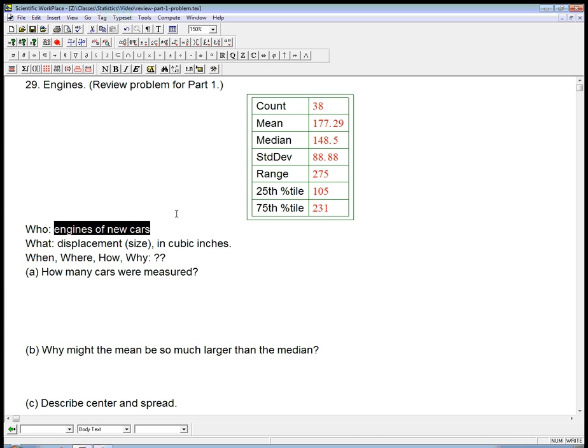We're going to go through some problems to make sure we understand what these summary stats can do for us and what questions we might want to ask. The when, where, how, and why, they don't make clear, and it's probably not super important for this particular problem. The first question they ask is just how many cars were measured. Well, that just means you need to realize what this word count means. Count equals 38, so 38 cars were measured.